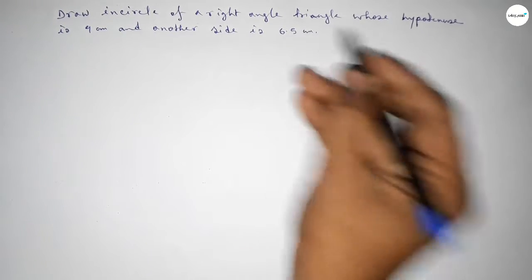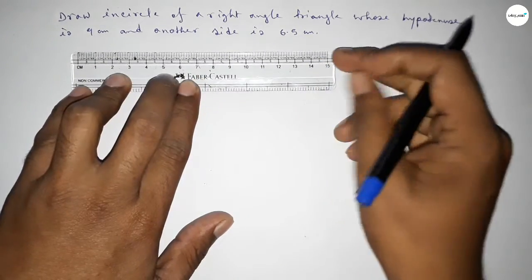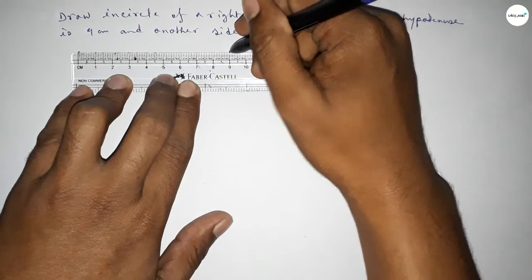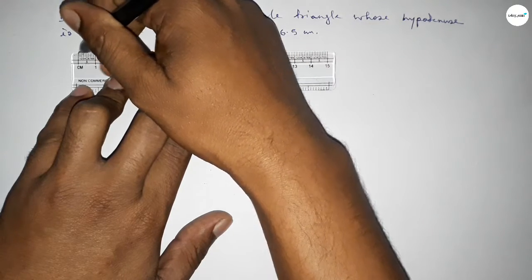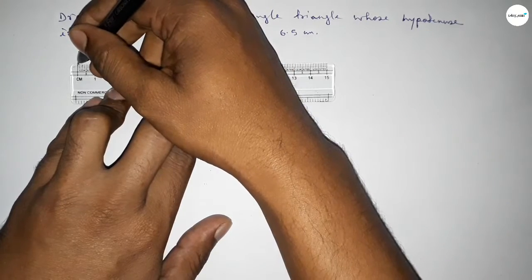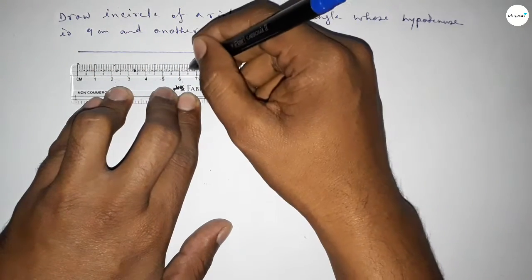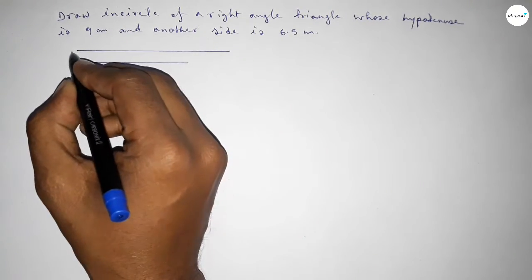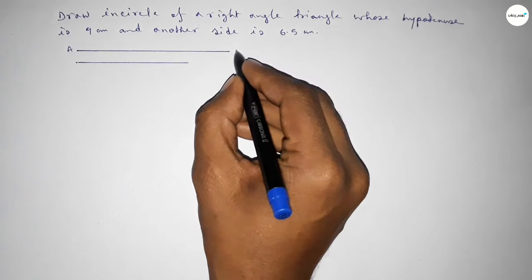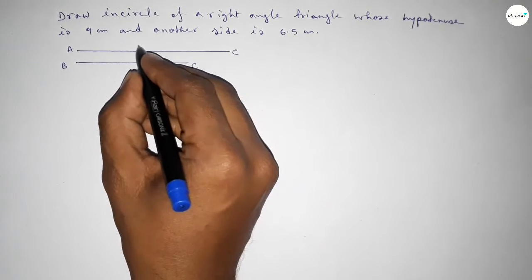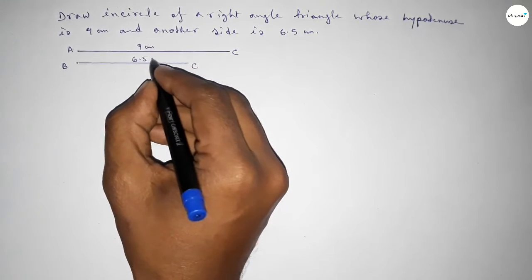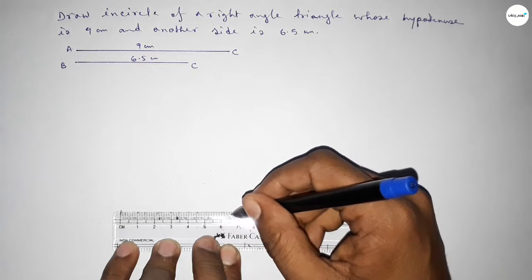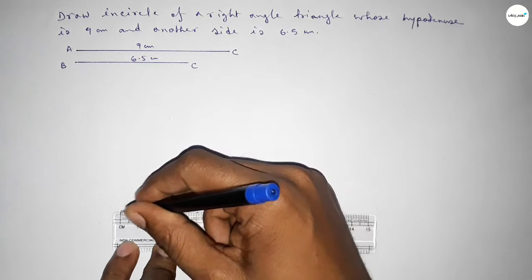Let's start the video. First of all, drawing a line of 9 centimeters for the hypotenuse, and then drawing another side of 6.5 centimeters. This is the AC line of 9 centimeters and the BC line of 6.5 centimeters. So first drawing a line of length 6.5 centimeters.